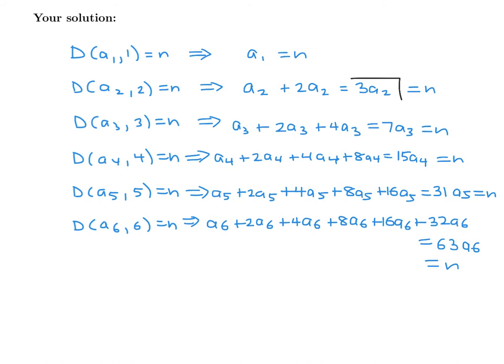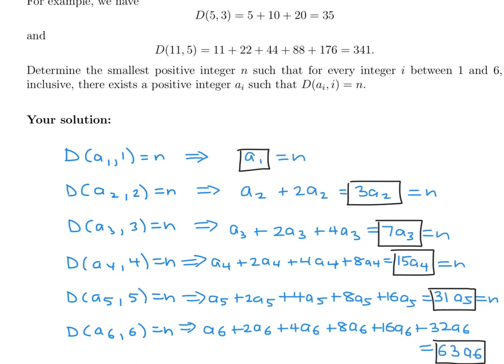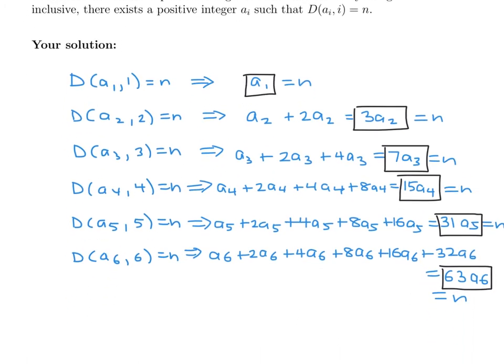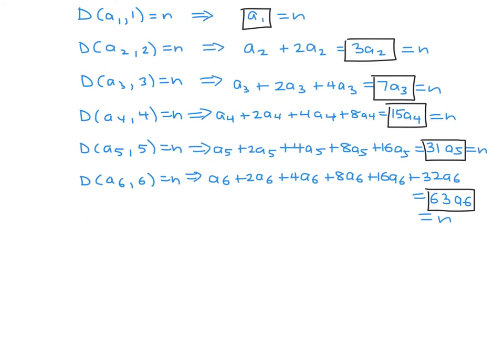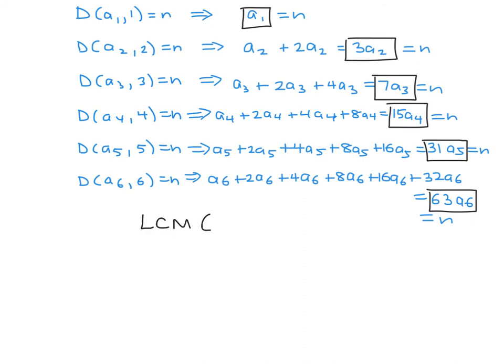So, that means that n has these factors, 3, 7, 15, 31, and 63, and I guess 1, but that doesn't help us. So, that means basically that the n, in terms of, they want the smallest, right? Yeah, they want the smallest. The smallest would basically be the least common multiple. So, we've got to find the least common multiple of 3, 7, 15, 31, and 63.